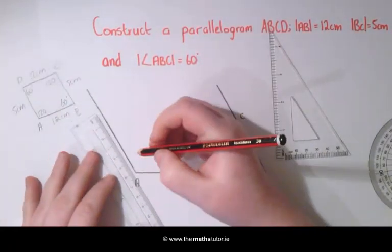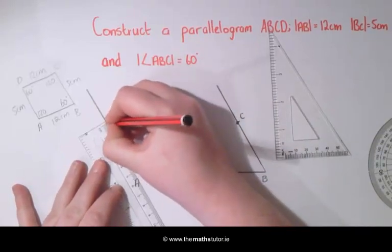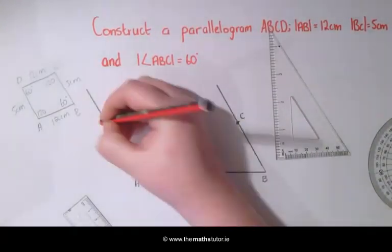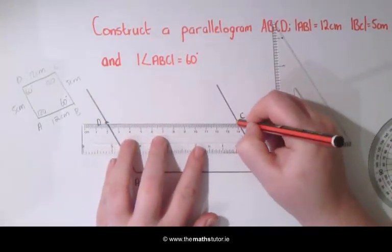This side is also to be 5cm so we are going to mark this in. And this here is our point D. We are now going to join C and D together.